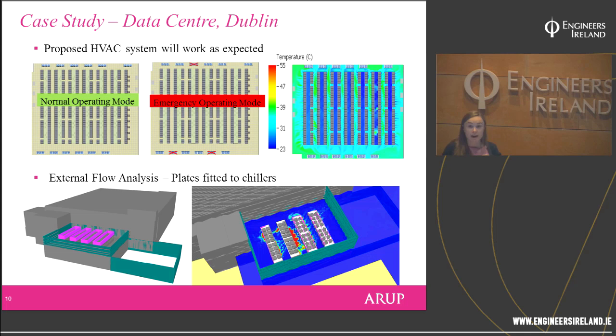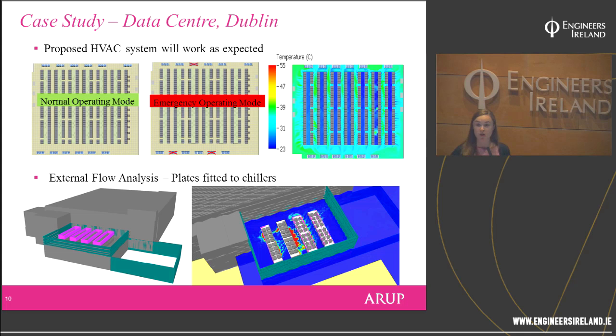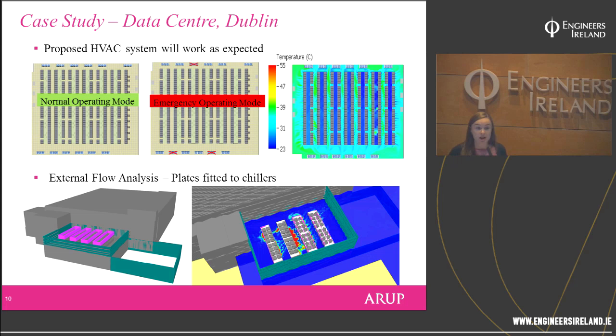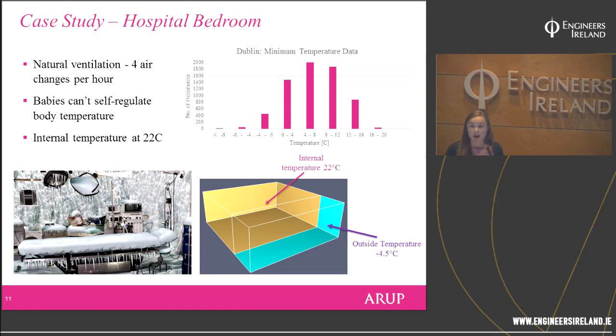As additional work, we did an external flow analysis. It was suspected the external chiller units were not performing efficiently, with outflow getting sucked back in as inflow. The contractor suggested adding plates to separate outflow and inflow. We efficiently added these plates to our model and found there would still be significant problems. Before the client or contractor spent any significant money on remedial works, we demonstrated it would not be an effective solution.